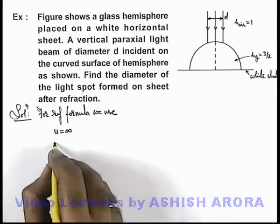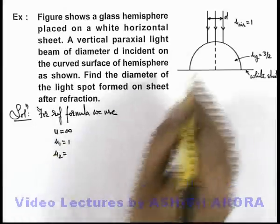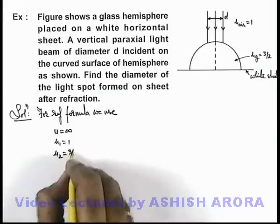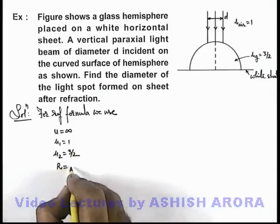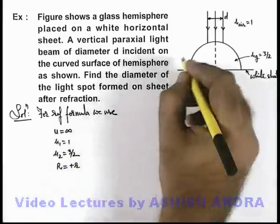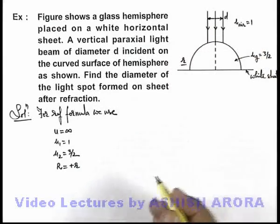In this situation, the refractive index for the incident rays is 1, and the refractive index for the refracted rays is 3/2. The radius of curvature we can take as +R, where R is the radius of curvature, and I am taking the downward direction as positive.